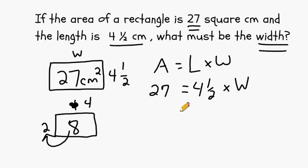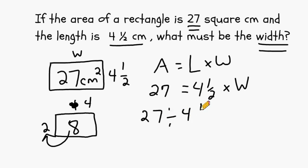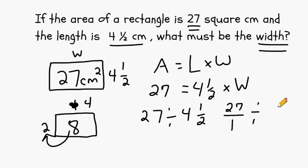And you would do the same thing even if one of the dimensions was a mixed number. So what we are going to do is take the area of 27 and divide it by 4.5. The next thing we are going to do is express our whole number as a fraction, which would be 27 over 1, and we have to rename our mixed number as an improper fraction. The denominator is 2, so that will remain the same. For the numerator, we do 2 times 4, which is 8, and add 1, and that gives us 9.